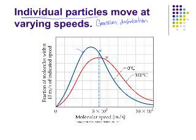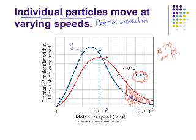The blue line here is showing a sample of gas at zero degrees Celsius, with this distribution — some particles are moving very slowly, some very quickly. The red line is showing the distribution of molecules at 100 degrees. At 100 degrees, we have a much higher fraction of particles at the high end of the molecular speeds. So as your temperature increases, the average kinetic energy is increasing as well, but we still have a wide range of molecular speeds.